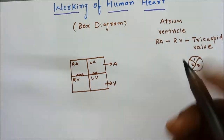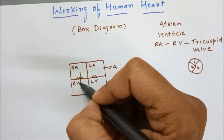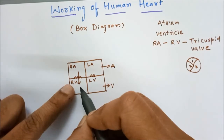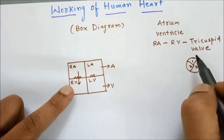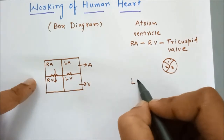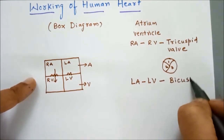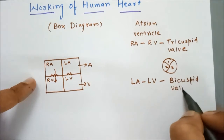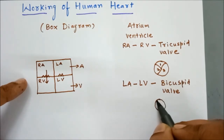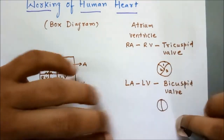The function of the valve is to prevent the backflow of blood. Blood comes in, the valves open, and blood enters the ventricle. When the lower chambers contract, blood does not go back upward because of the valve. Between the left atrium and left ventricle there is the bicuspid valve, made up of two flaps that open and close — that is why it is called bicuspid.